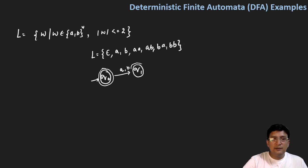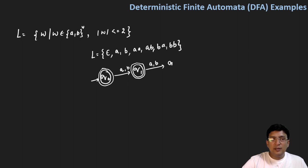The single length string should also get accepted. After this, if I get any string of length two — meaning the symbol is A or B — I should once again reach state q2, and the two length string should also be accepted. So q2 is also a final state.